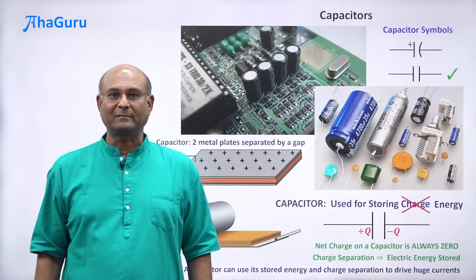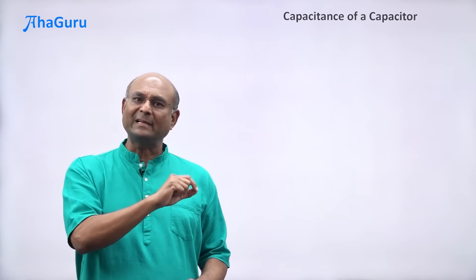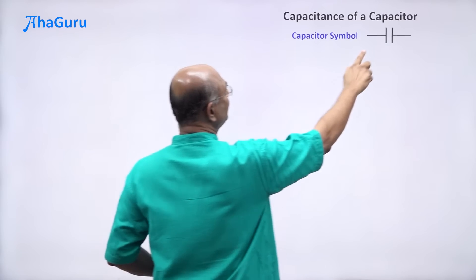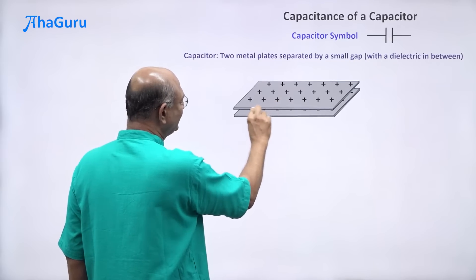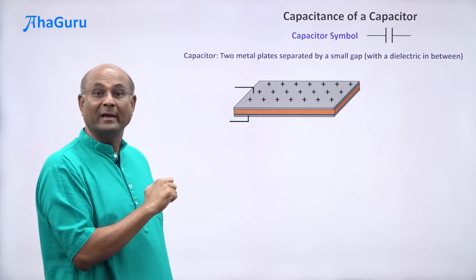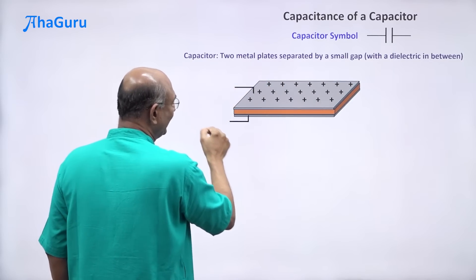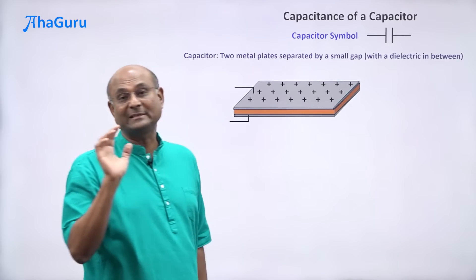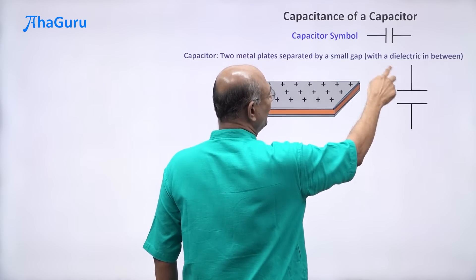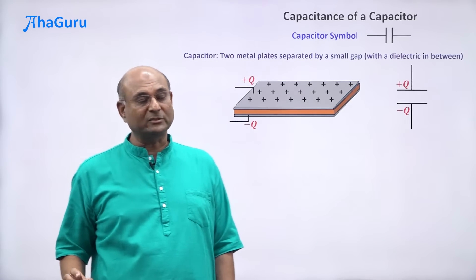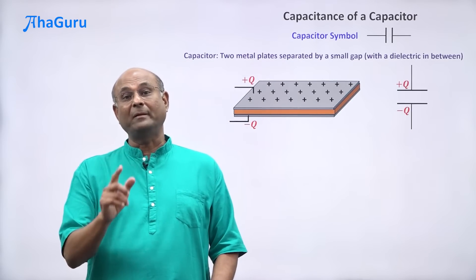Let us now study the properties of a capacitor. The most important property is its capacitance. The capacitor symbol has two straight lines representing two metal plates separated by a small gap with a dielectric in between. To get the charges to separate, we connect the wires to a battery. The battery pulls electrons from the top plate, so the top plate becomes positively charged and the bottom plate gets negatively charged — plus Q and minus Q. Whenever there is charge separation, there will be electric fields.